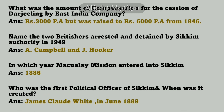What was the amount of compensation for the cession of Darjeeling by the East India Company? It was rupees 3,000 per annum, but was raised to rupees 6,000 per annum from 1846. Name the two British nationals arrested and detained by Sikkim authority in 1849 — Campbell and J. Hooker.